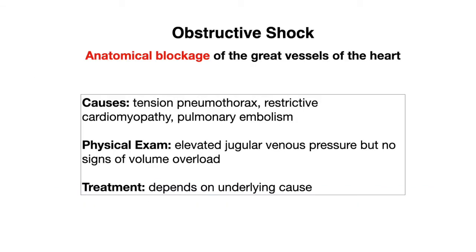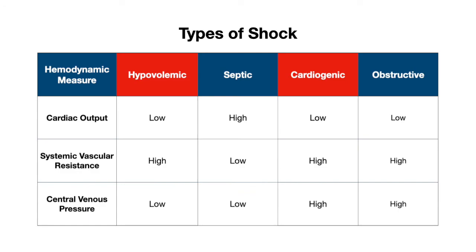Our fourth type of shock is obstructive shock, which occurs when there is an anatomical blockage of the great vessels of the heart. Causes can range from a tension pneumothorax to restrictive cardiomyopathy to a pulmonary embolism, among others. On physical exam, patients will have an elevated jugular venous pressure from backup of fluid, but without the signs of volume overload typically seen with heart failure or cardiogenic shock. Treatment depends on the underlying cause — once the obstruction is removed, the issue is largely resolved. Hemodynamically, obstructive shock mirrors cardiogenic shock: low cardiac output, high systemic vascular resistance, and high central venous pressure.